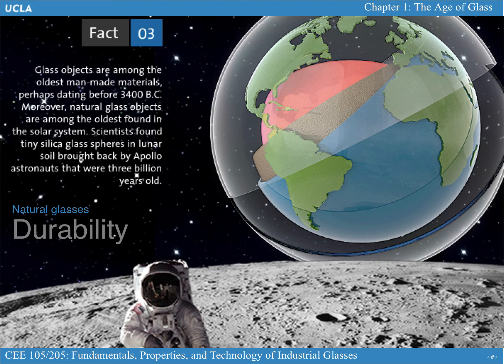You can find very old glasses in nature, but you can also find glasses made by humans — glasses from about 3000 BC, made by the Mesopotamians and Egyptians, of which examples still exist because glass is very durable. Unlike materials like steel, which tends to rust over time, or concrete, which can start dissolving after several centuries, glass is really one of the most durable materials for construction.